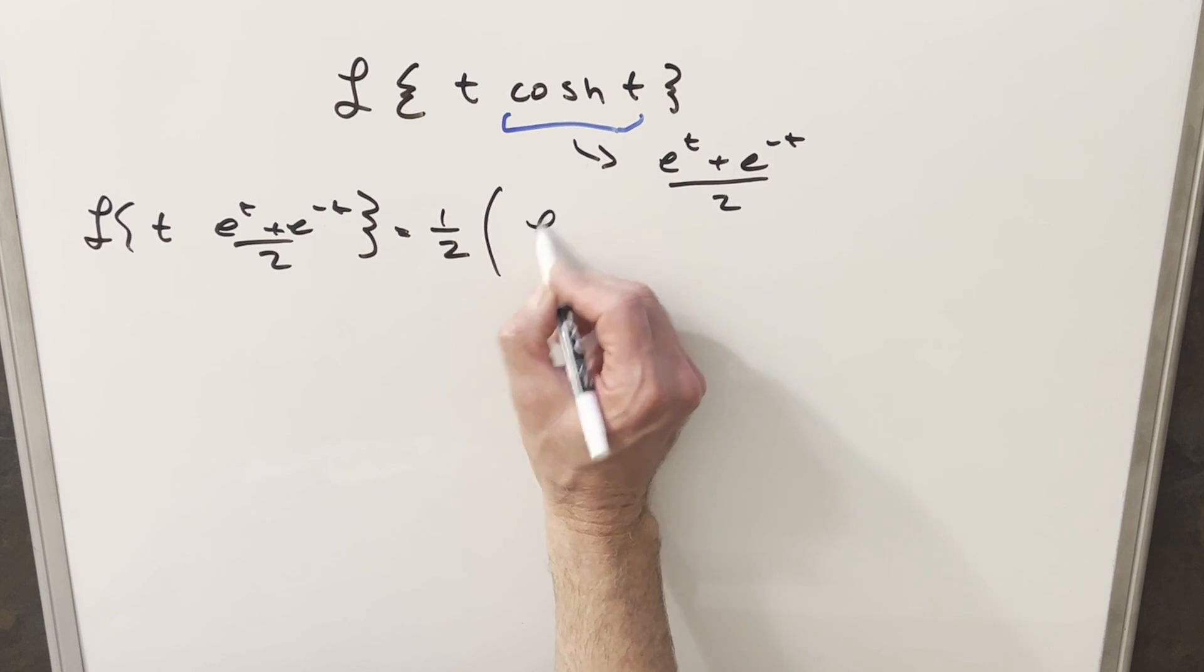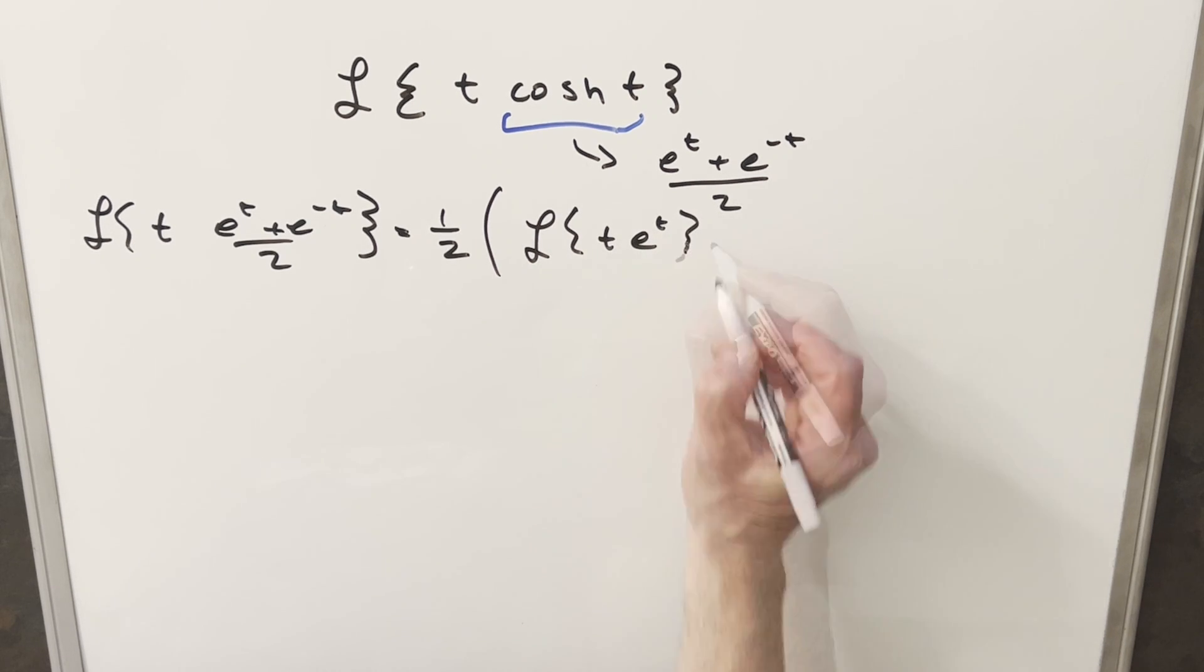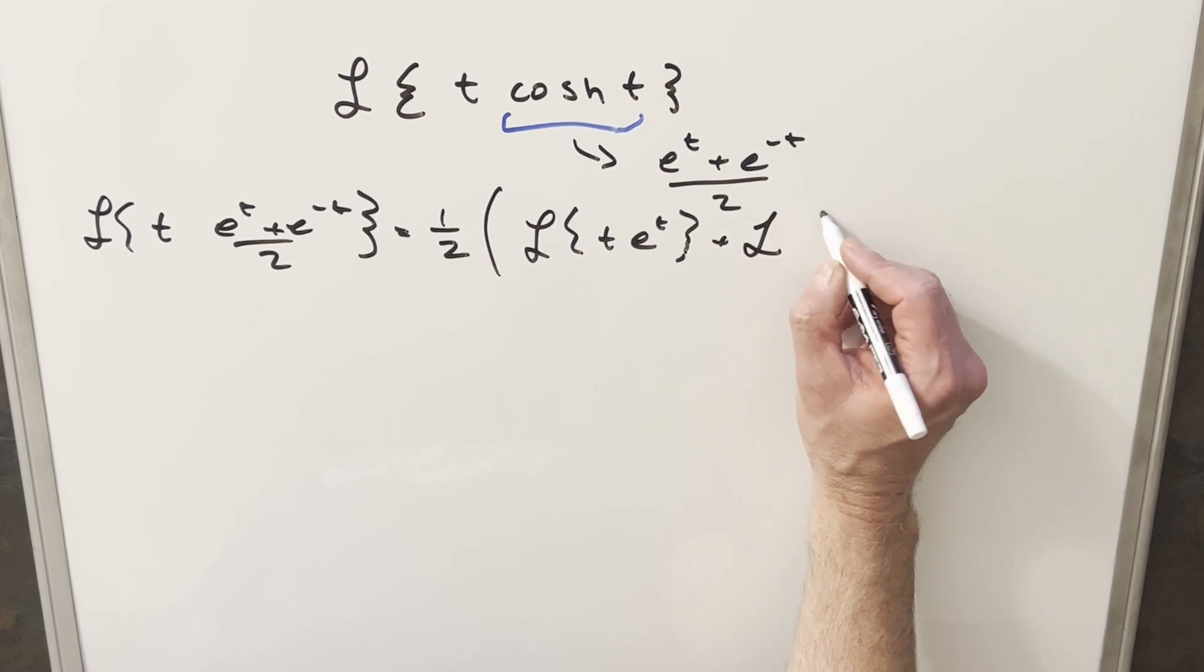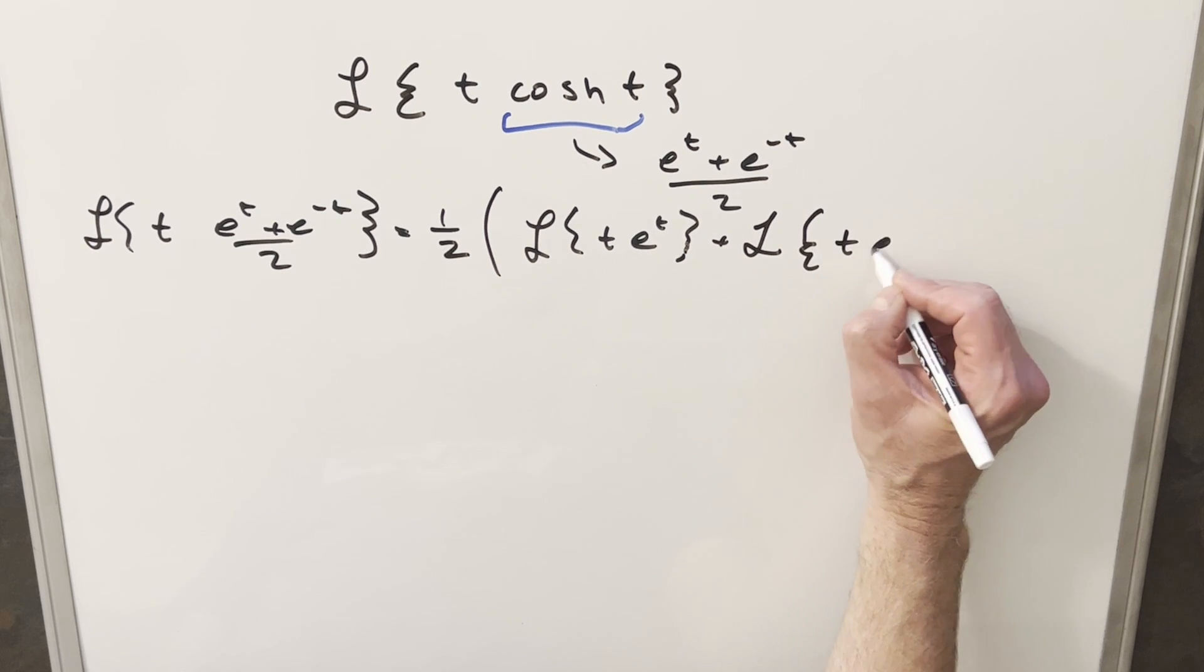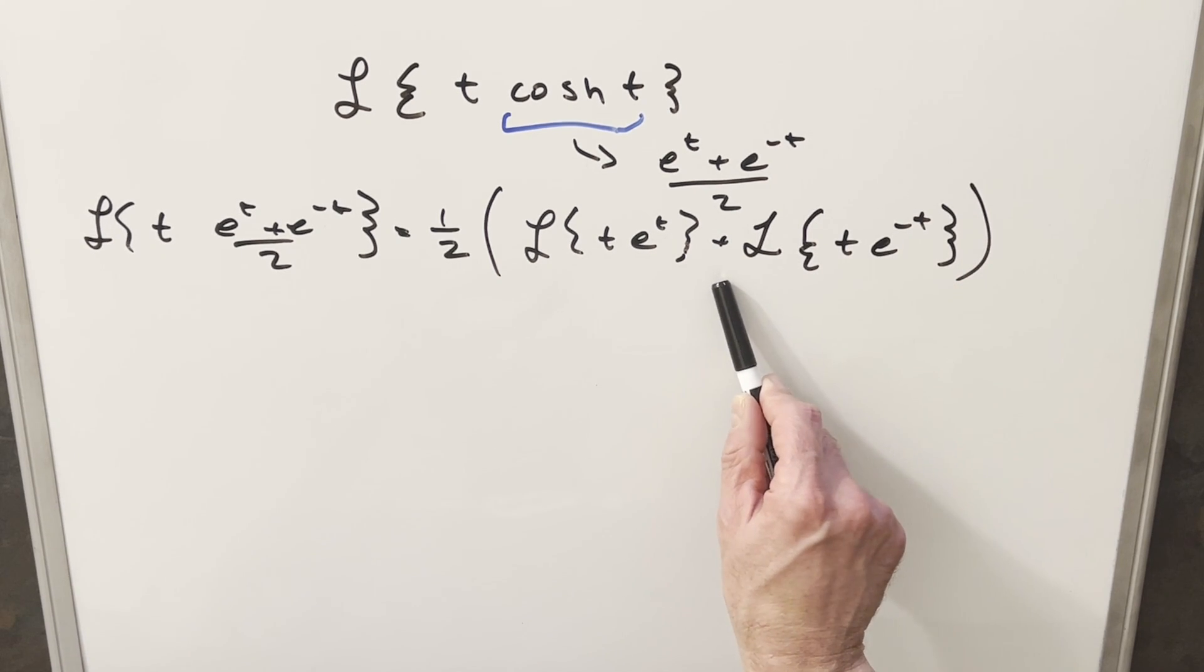What we'll do is write this as Laplace of t e to the t plus Laplace of t e to the minus t. We can split this up on the addition sign the same way we can split up an integral on the addition sign.